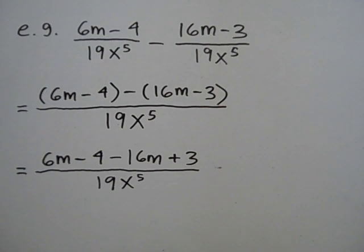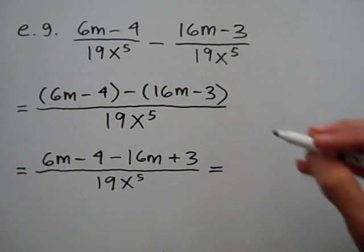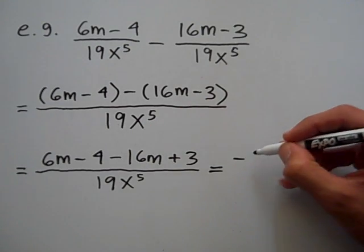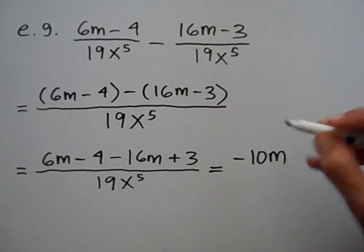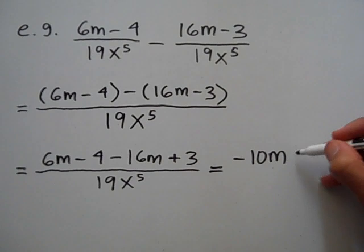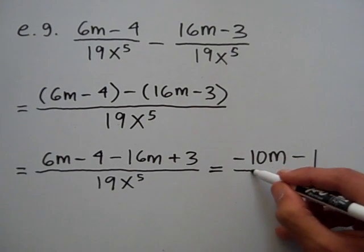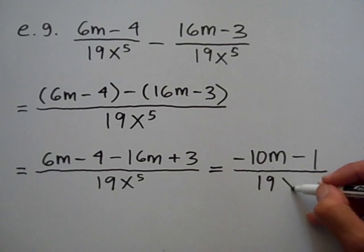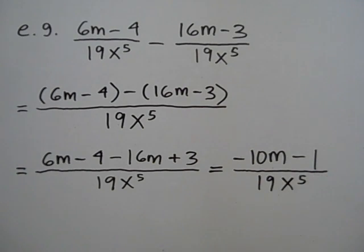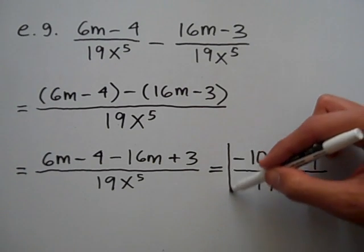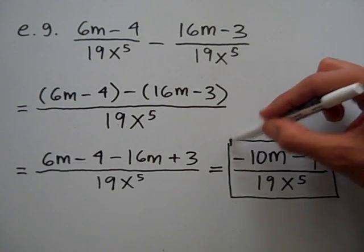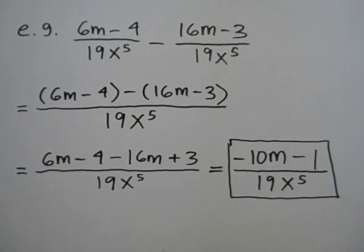Combining like terms in the numerator: 6m minus 16m is negative 10m, and negative 4 plus 3 is negative 1. That is over the denominator 19x to the 5th. So this is the difference of these two algebraic fractions.